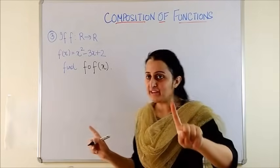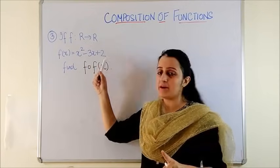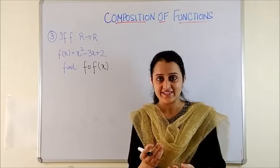Now for question 3, you are given only one function R to R which is defined as x square minus 3x plus 2. And you have to find the composition of function with itself.